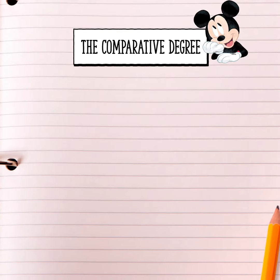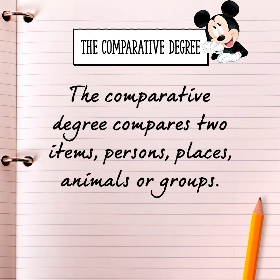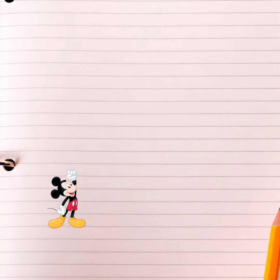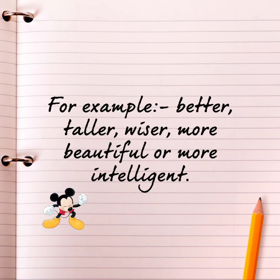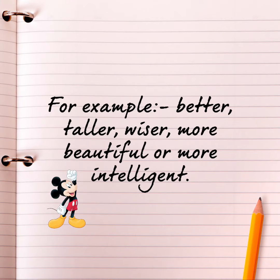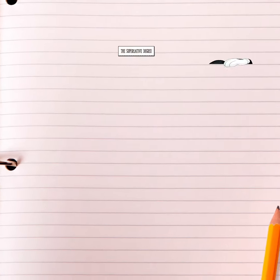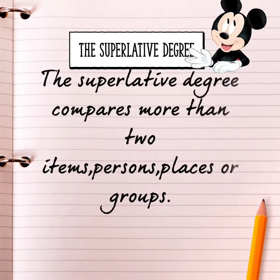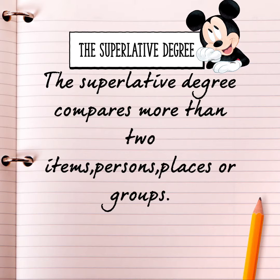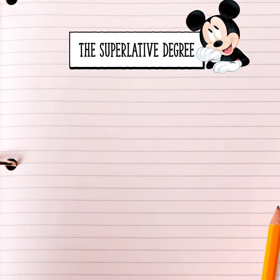The comparative degree compares two items, persons, places, animals or groups. For example: better, taller, wiser, more beautiful or more intelligent.